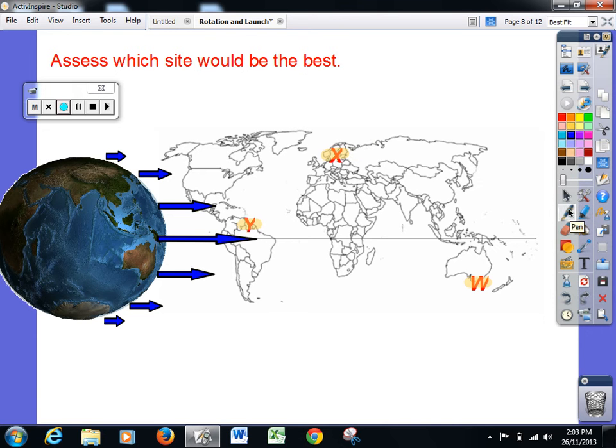The Americans launch their rocketry from the bottom part of Florida here. This is the most southerly part of the continent of the United States, and it's approximately 30 degrees north of the equator. Whereas this one here is 5 degrees north and Woomera is also approximately 30 degrees south of the equator.